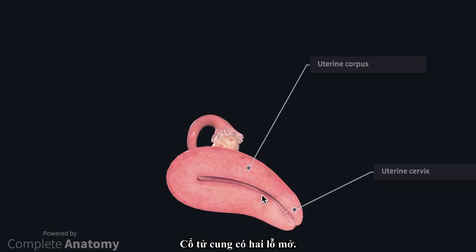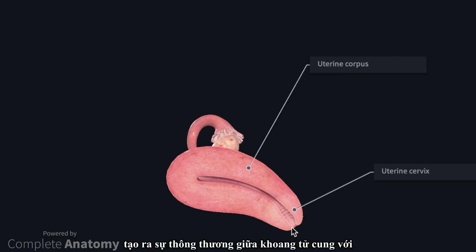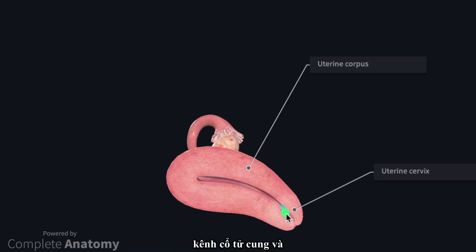The cervix has two openings: a proximal opening referred to as the internal cervical os, and a distal opening which is the external cervical os. This allows for communication between the uterine cavity, the cervical canal, and the vagina, which isn't included on this model.